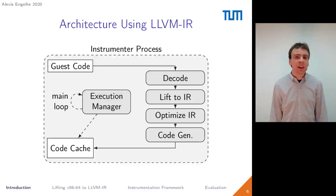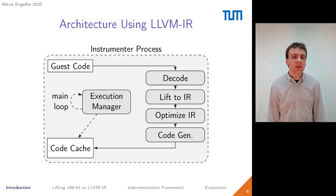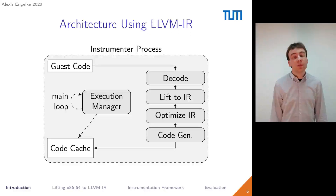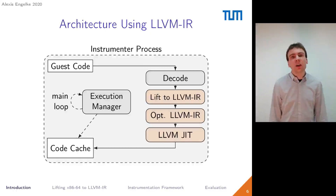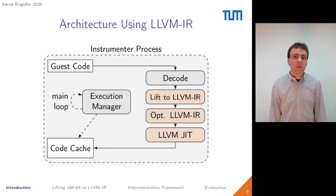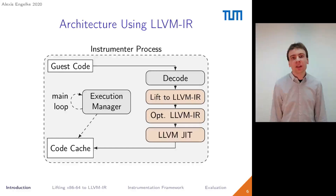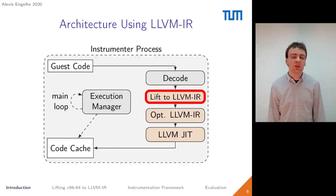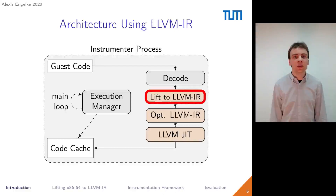To incorporate LLVM IR into this architecture, we do not lift to a custom intermediate representation, but instead use LLVM IR directly. We lift to LLVM IR, optimize the LLVM IR code, and then use the LLVM JIT compiler to generate new code. The LLVM JIT compiler and optimizations are already available in the LLVM framework. However, the lifter from machine code to LLVM IR is not, and that is what the next section of this talk is about.